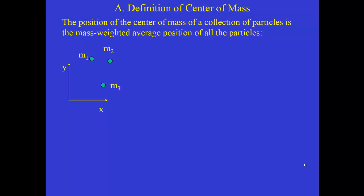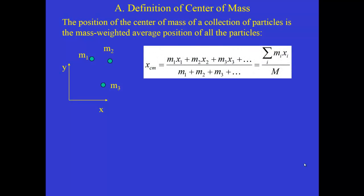So if we have these three masses — m1, m2, m3 — and they're sitting in the xy plane, then we can define the x-coordinate of the center of mass of that three-particle system by taking each of their x-coordinates: the x-coordinate of particle one multiplied by its mass, the x-coordinate of particle two times its mass, and particle three, its position times its mass.